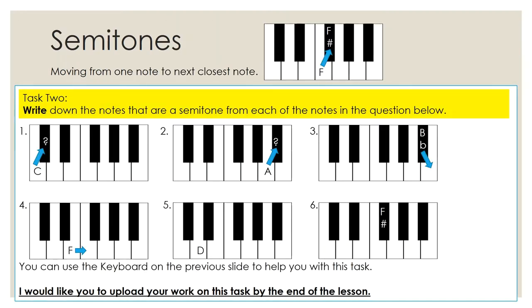Once you've done that, we move on to task two, which we're looking over semitones. Just to remind you, semitones is moving from one note to the next closest note. So as I put in the little diagram at the top, F, the closest note to F is not the next white note, which would be G, but it's actually the accented black note, which would be F sharp. So the closest note, you want to think about the closest note to that one note.